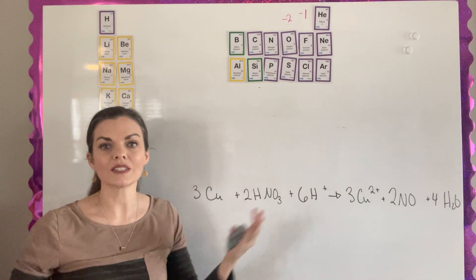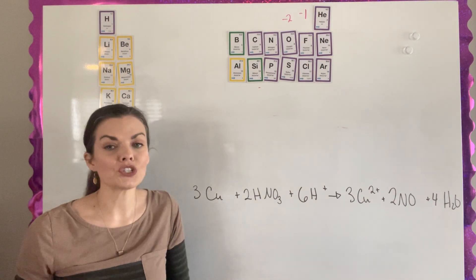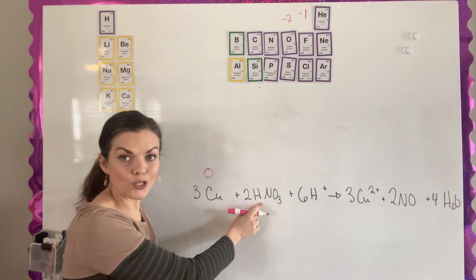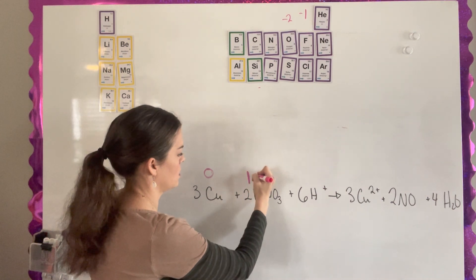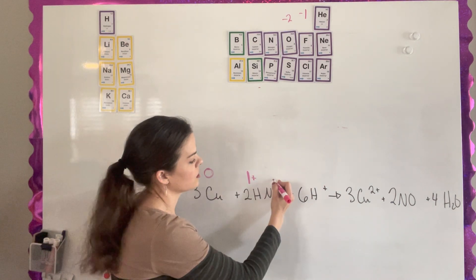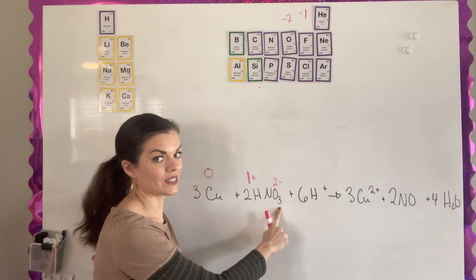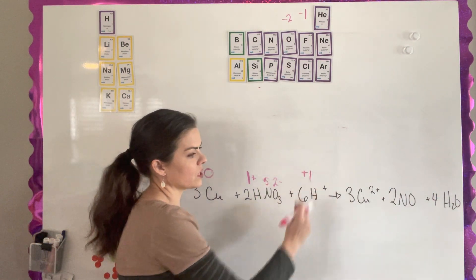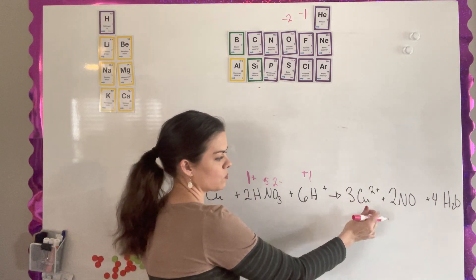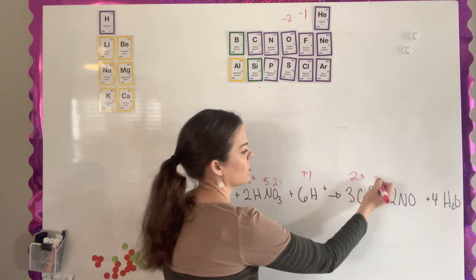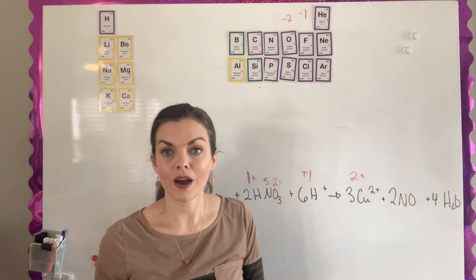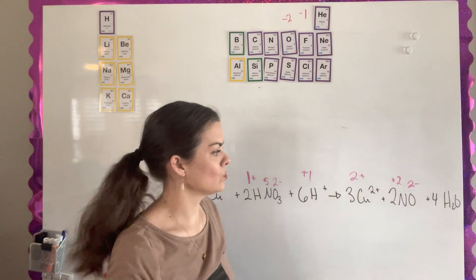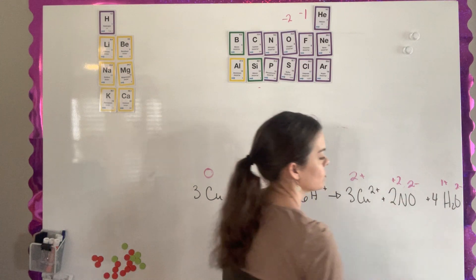For the last compound, copper is just one element so it has a zero oxidation state. For the acid HNO3, hydrogen is plus one. Oxygen is negative two and there are three oxygens, so that's negative six; plus one for hydrogen means nitrogen must be positive five. In the product, copper is Cu2+, so it's positive two. For NO, oxygen is negative two so nitrogen must be positive two.